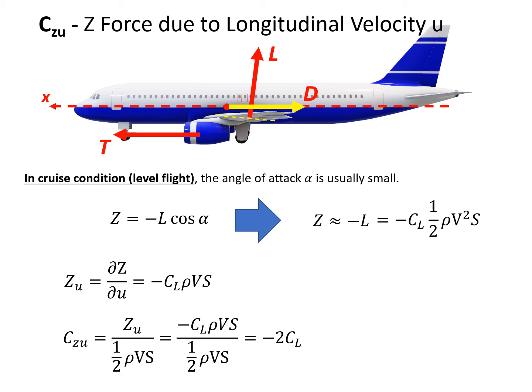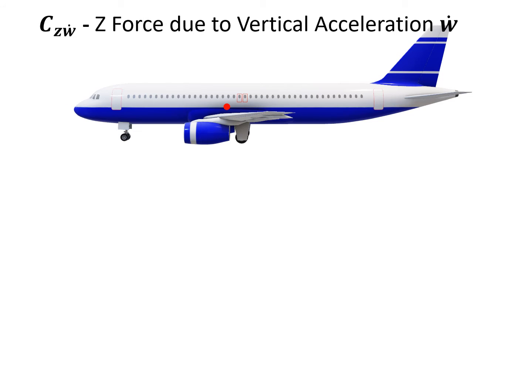So this is an approximation — the small angle of attack approximation was applied. The second derivative we look at is Czw-dot, the z-force change due to vertical acceleration. Again we have the side view of the aircraft. Before doing the derivation, let's first answer: what is wind downwash?